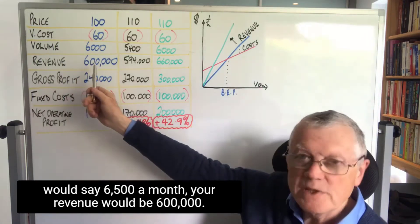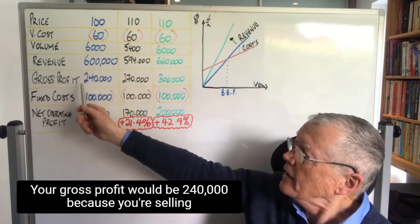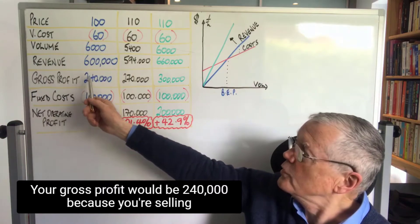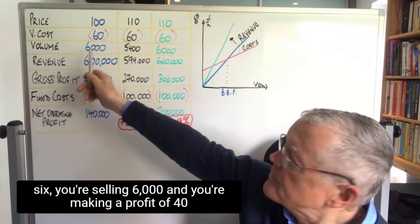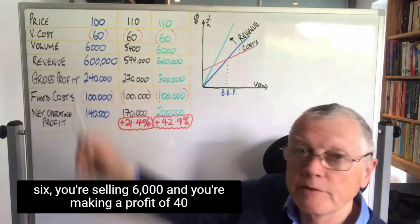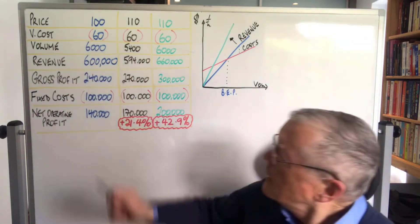Your revenue would be 600,000, your gross profit would be 240,000 because you're selling 6,000 units and you're making a profit of 40 on each, so your gross profit is 240,000.